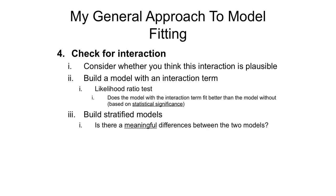After deciding which variables to keep or drop in terms of confounders and other predictors, the next thing is to look for effect modification or interaction. Let's say we're interested in the effect of smoking on lung cancer, and if this varies by age. With interaction, you always want to think through conceptually whether this makes sense — in this case it could, for example, smoking might have a stronger association with lung cancer at older ages. There are two options to investigate whether this conceptual understanding is reflected in the data: you can build a model with an interaction term, or fit stratified models.